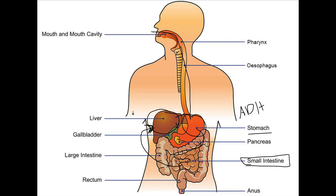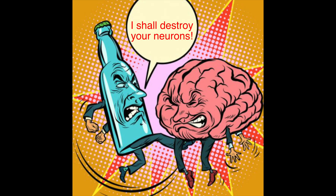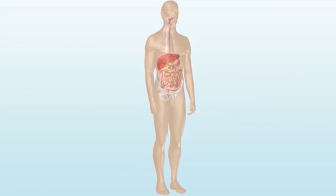Any alcohol that is not metabolized throughout this process is going to return to the blood and then circulate through the body and also go to our brain, which explains why we have slurred speech or we're not able to walk in a straight line — because the alcohol is going directly to our brain.